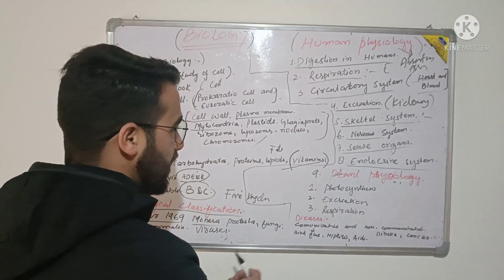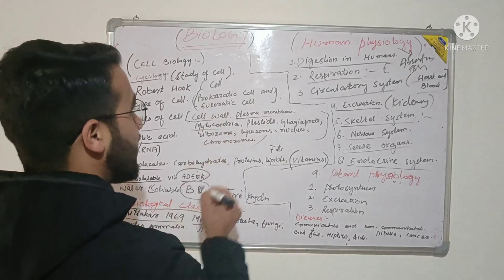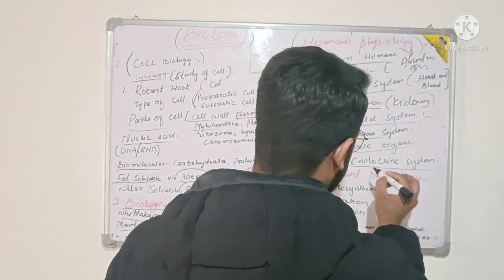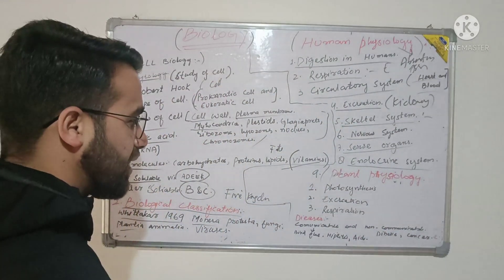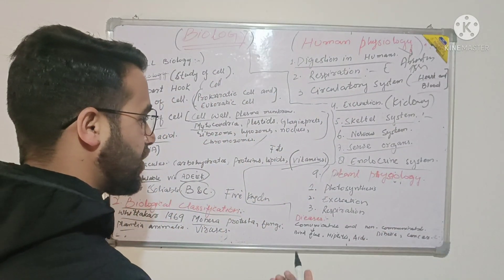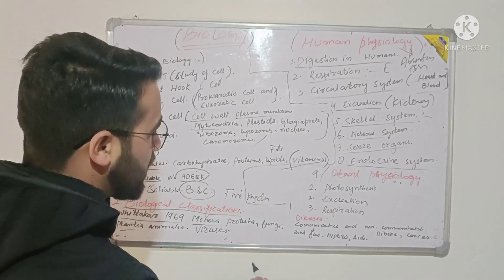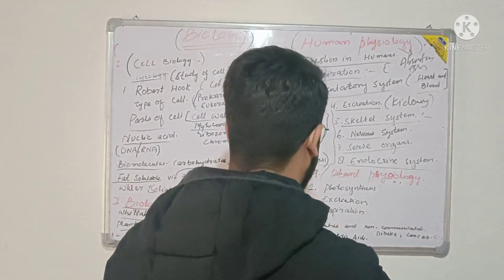Then hormones. That's the fourth chapter - plant physiology. Here you will study about photosynthesis, excretion, and respiration in plants.